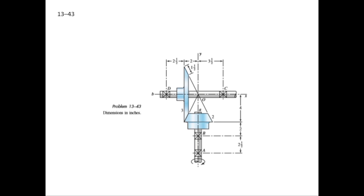In today's lecture we will do force analysis on bevel gear and solve problem 13.43. This is the diagram where we have two gears: gear 2 and gear 3. The pinion gear is rotating and the torque given to it from the source is TN. Pinion or gear 2 is mounted on shaft A and gear 3 is mounted on shaft B.